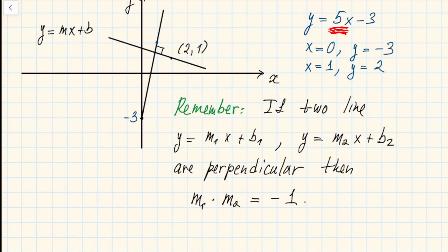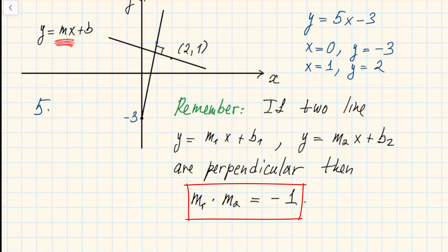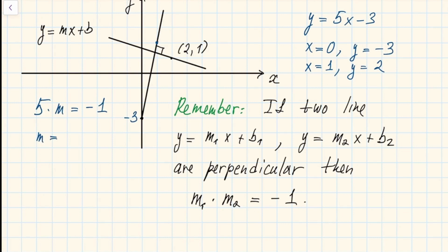In this case, one slope is five, so the second slope must satisfy five times m equals negative one, giving a slope of negative one-fifth.